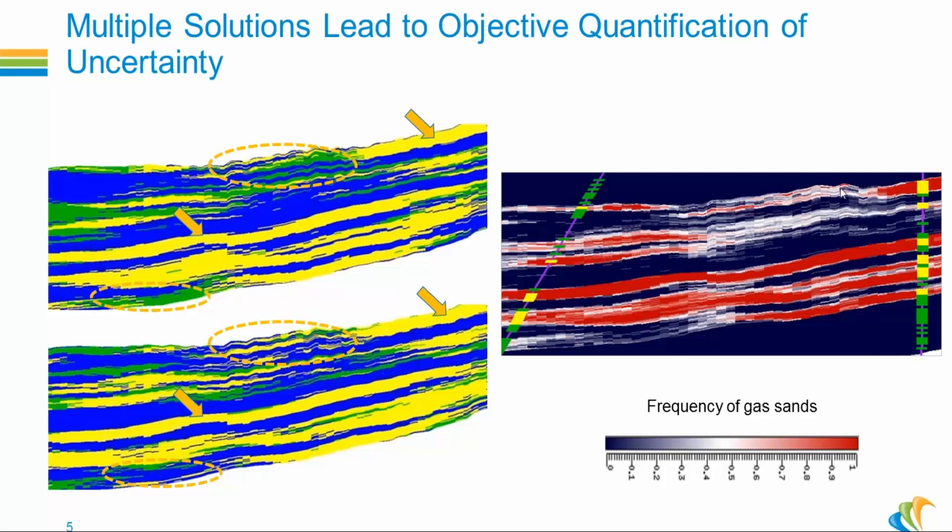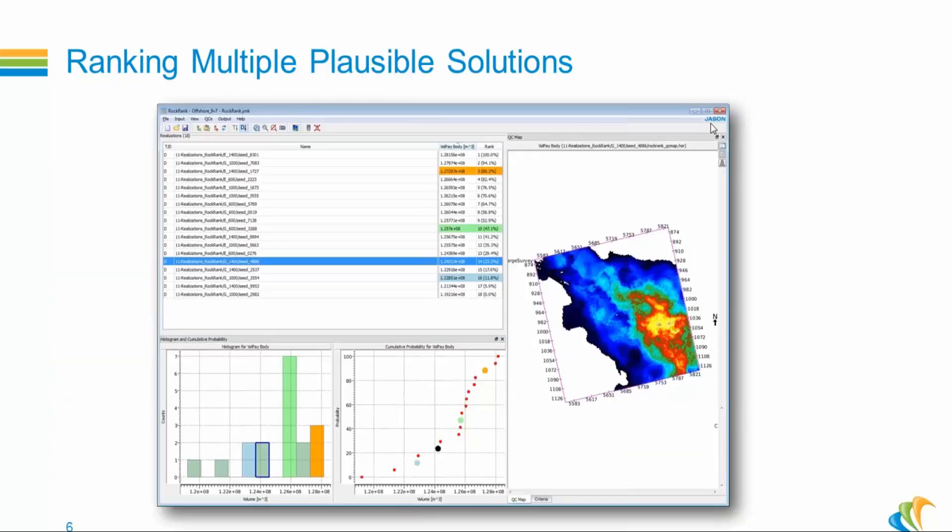However, summary statistics are not appropriate to be delivered as a model of the reservoir. For that, you need to use a different approach. You need to make a selection.